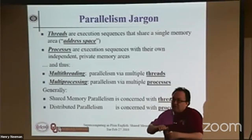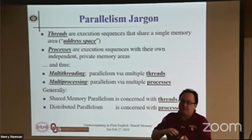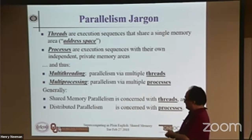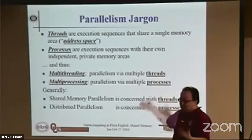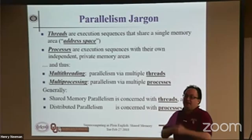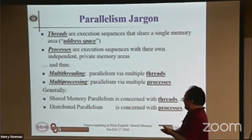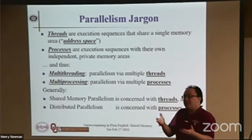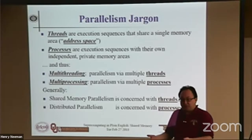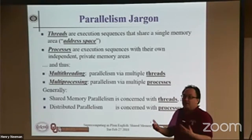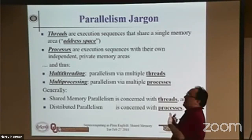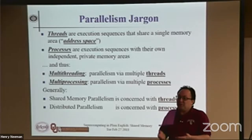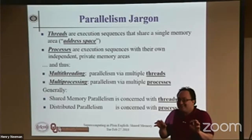Technically, threads have a shared address space; technically, processes have private address spaces. In practice, you will hear people use these words interchangeably — that's not great, but it's the reality. Technically, multi-threading means parallelism by multiple threads that all share the same address space. Multi-processing means multiple processes that each have their own private address space. Generally, when we talk about shared memory parallelism we're talking about multi-threading; distributed parallelism, we're talking about multi-processing.